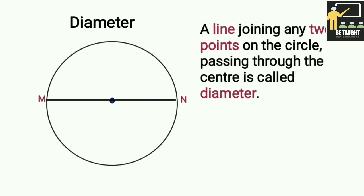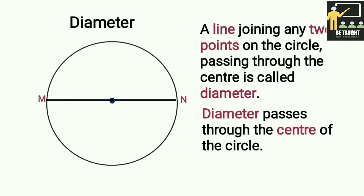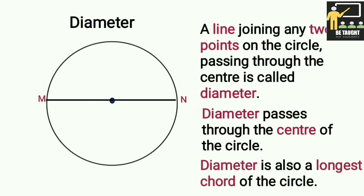Diameter: A line joining any two points on the circle passing through the center is called the diameter. The diameter passes through the center of the circle and is also the longest chord of the circle. Here, MN is the diameter.